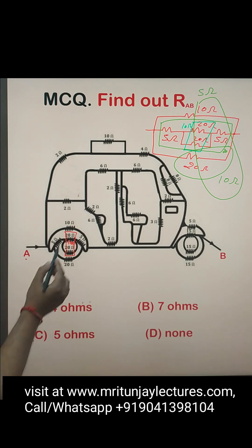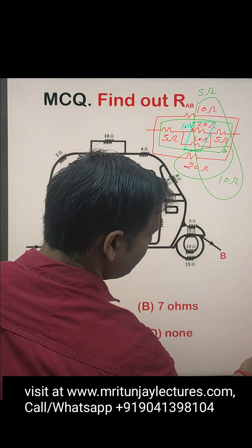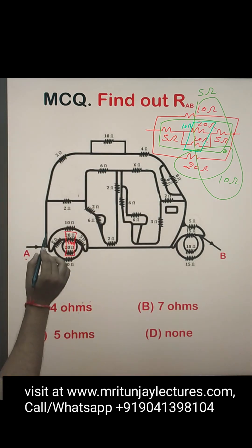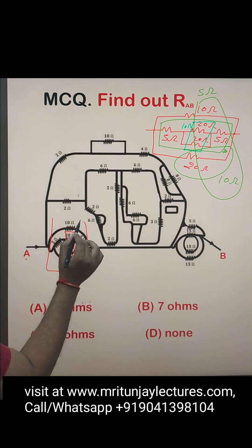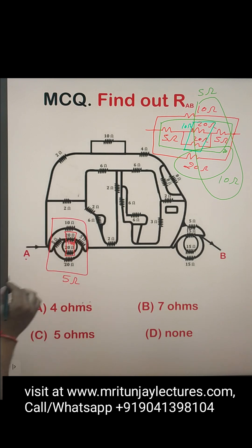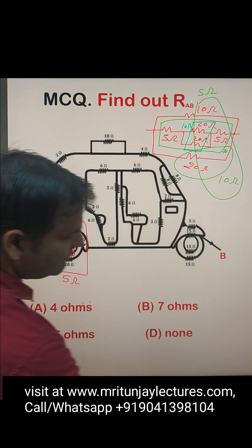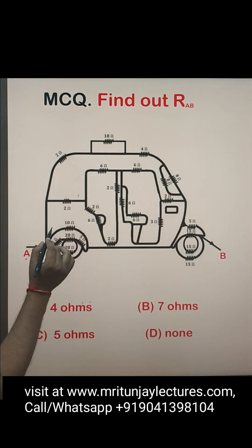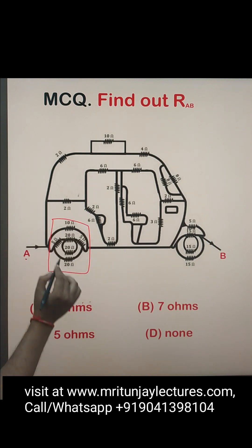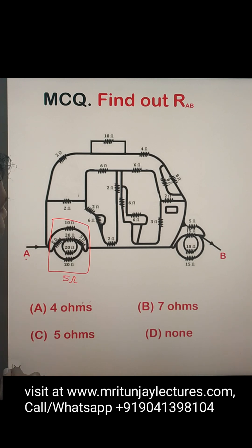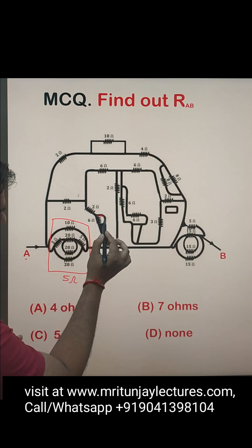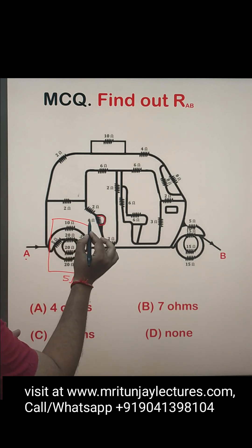So the combination of that section is 5Ω. After that, look here: there is a 6Ω resistor but here there is a short circuit, so no current flows in the 6Ω resistor.